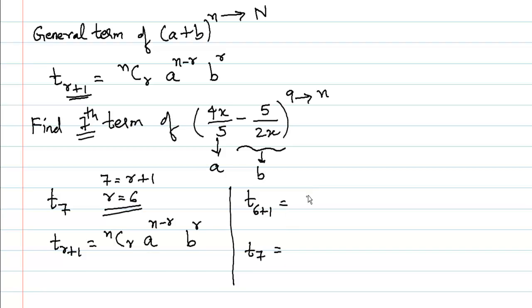So the value of r is 6, n is 9, giving us 9C6 × a^(n-r). The value of a is 4x/5, and n - r = 9 - 6 = 3, so we can directly write 3.